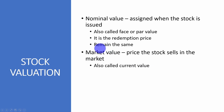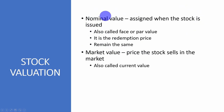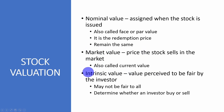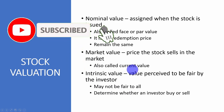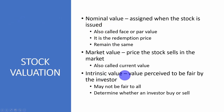The market value is the price that the stock sells in the market — that is the current value of the stock in the secondary market. For the nominal value, this is when the company issued the stock to the general public by way of public offering. But market value is the price the stock is sold on the stock exchange. The intrinsic value is the value perceived to be fair by the investor. Those that want to invest have a value that they attach to the stock on their own.